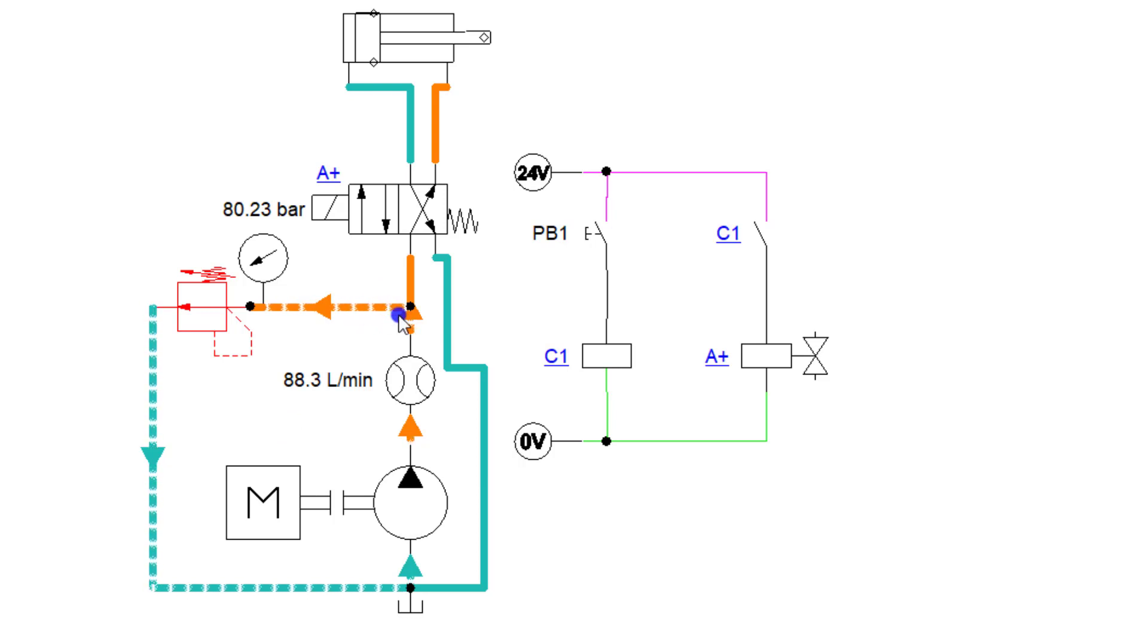We have two forms of going back to tank. One being that it is going back from the solenoid that is not active and the other one is the pressure relief. And you can see how you can adjust the pressure relief based upon that.